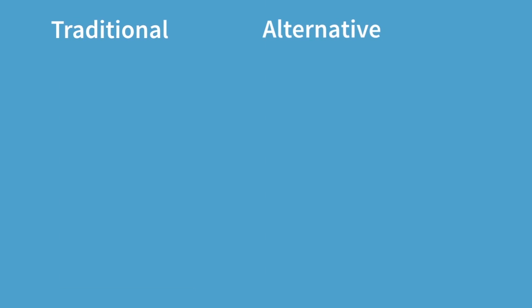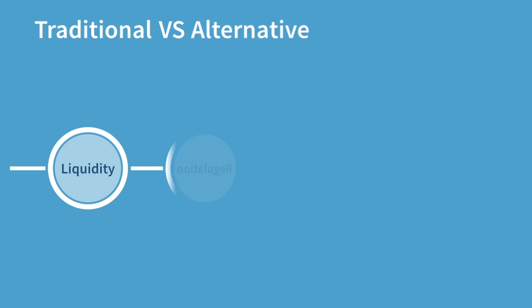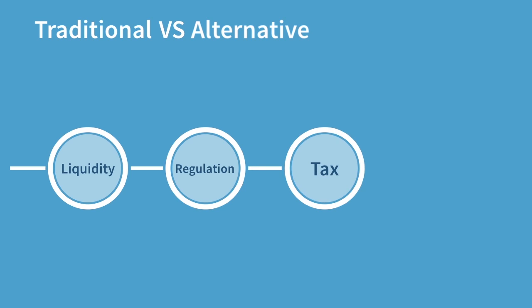When we compare alternative investments to traditional investments, differences arise in terms of liquidity — alternatives are generally less liquid. In terms of regulation, alternatives are currently not as strictly regulated as the stock or bond markets and the activities of market participants are generally not as transparent. Tax treatment is often more complicated with alternatives, and although stock and bond market data is widely available, historical price and volatility information for alternatives is universally less common.